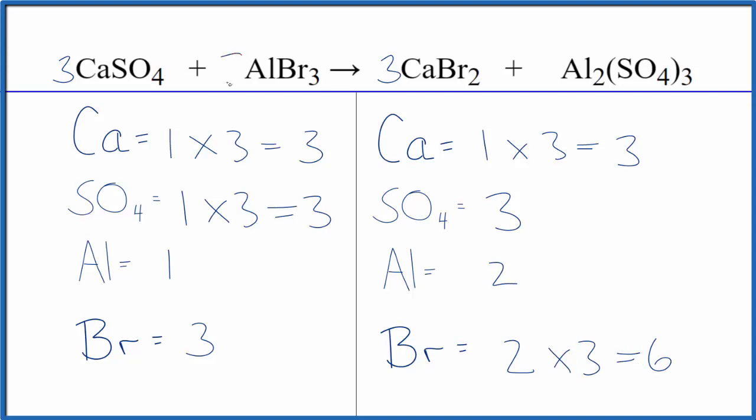But if we put a two here in front of the aluminum bromide, one times two, that balances the aluminums. And then three times two, that'll give us six bromine atoms. And we're done. This equation is balanced.